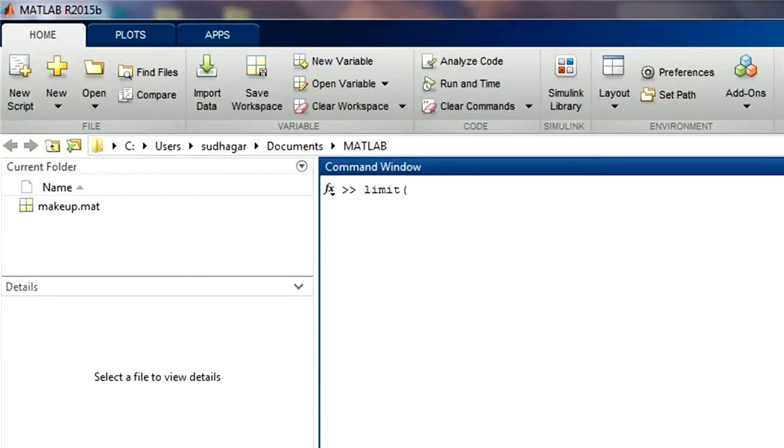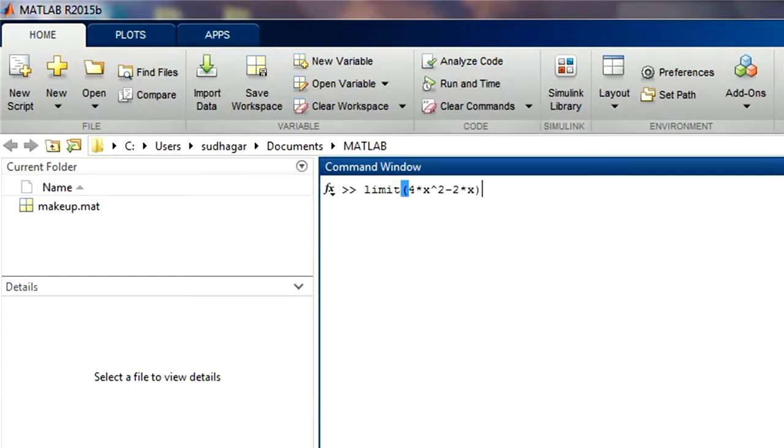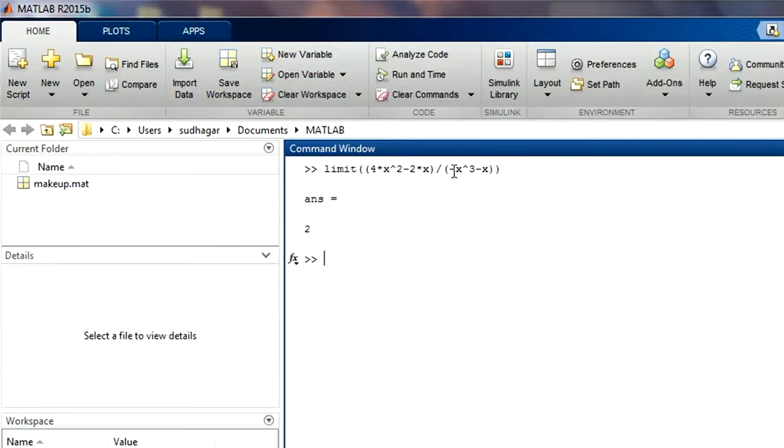Now let us type limit. The function is 4 multiply x square, x square we can take x power 2 minus 2 multiply x. Now we can close the numerator divide. The denominator is minus x cube minus x. So we have given the function. If the limit is 0, no need to give anything. Simply close enter. This is the answer.